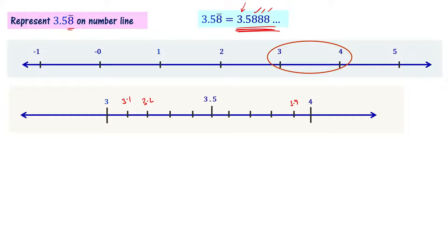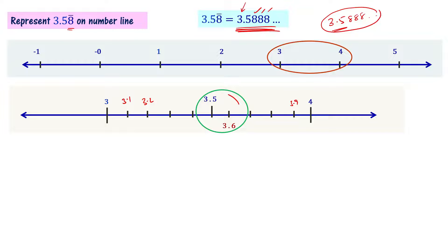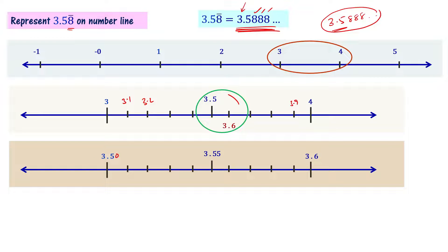Now looking at 3.5888..., the first decimal digit is 5, so it lies between 3.5 and 3.6. We have to zoom in and magnify the number line between 3.5 and 3.6. When we magnify it, we get a number line showing 3.50, 3.51, 3.52 ... up to 3.59 and 3.60. Now we see that 3.588 lies between 3.58 and 3.59.